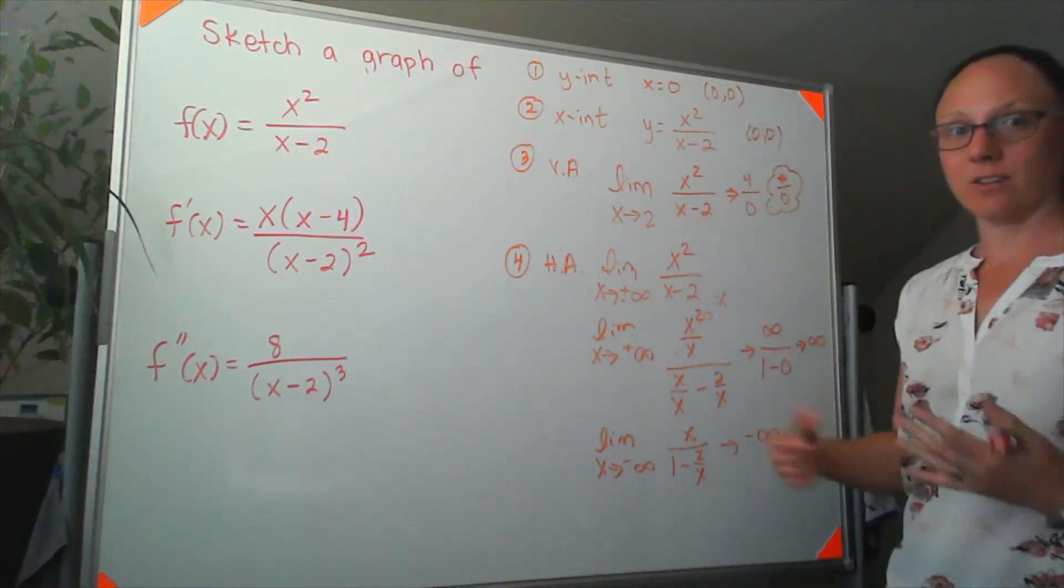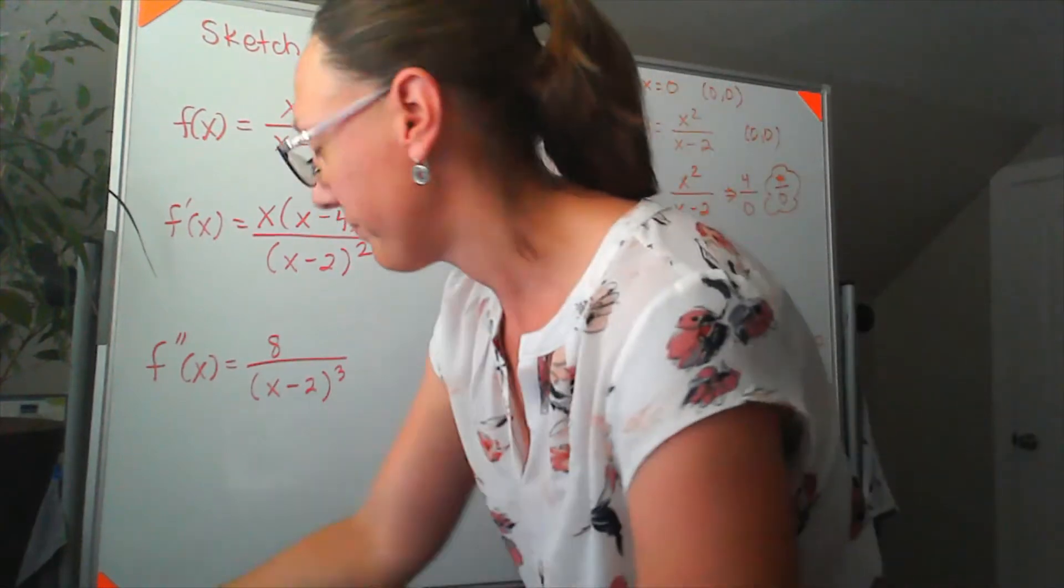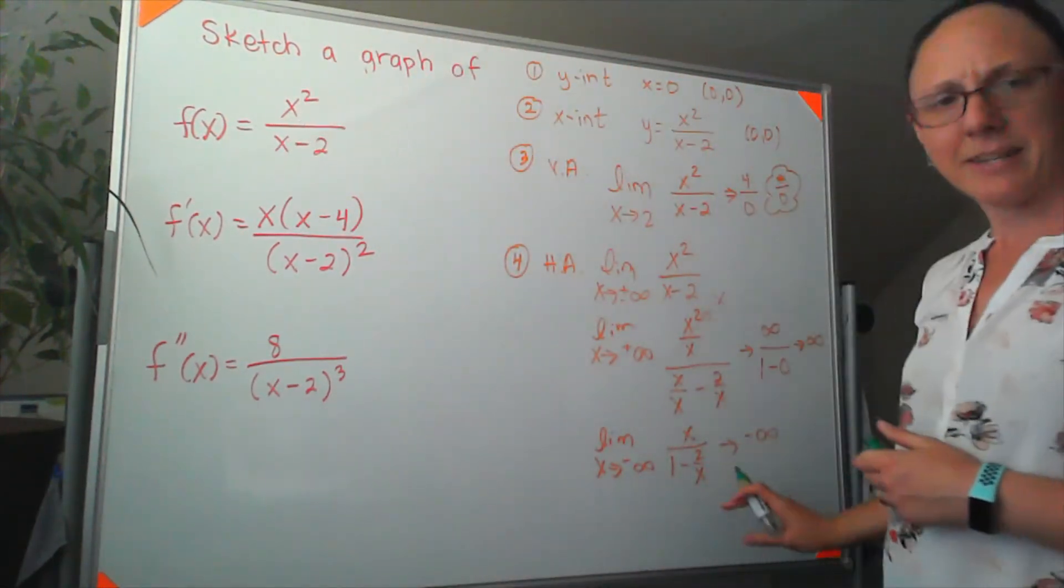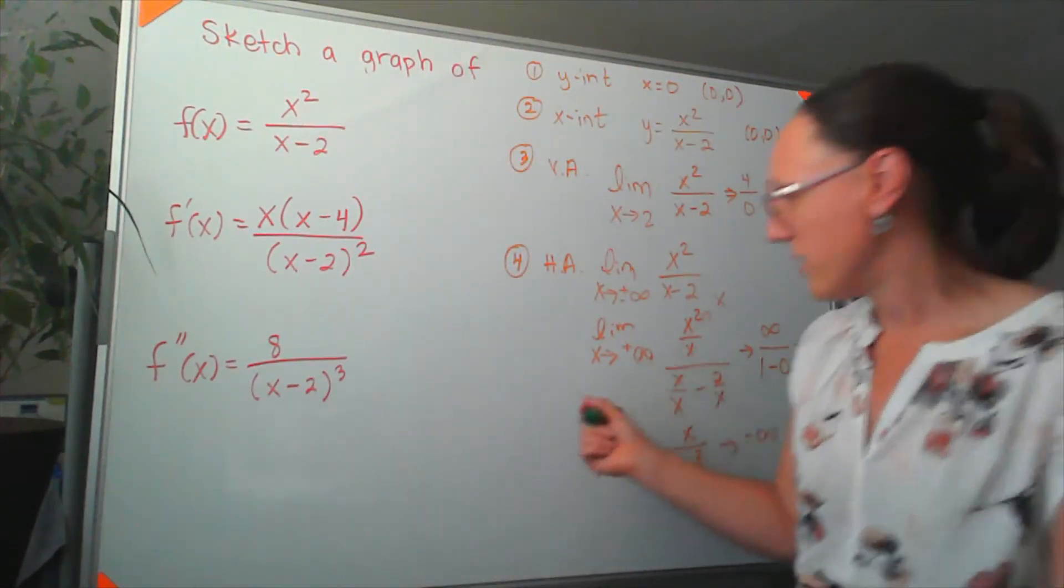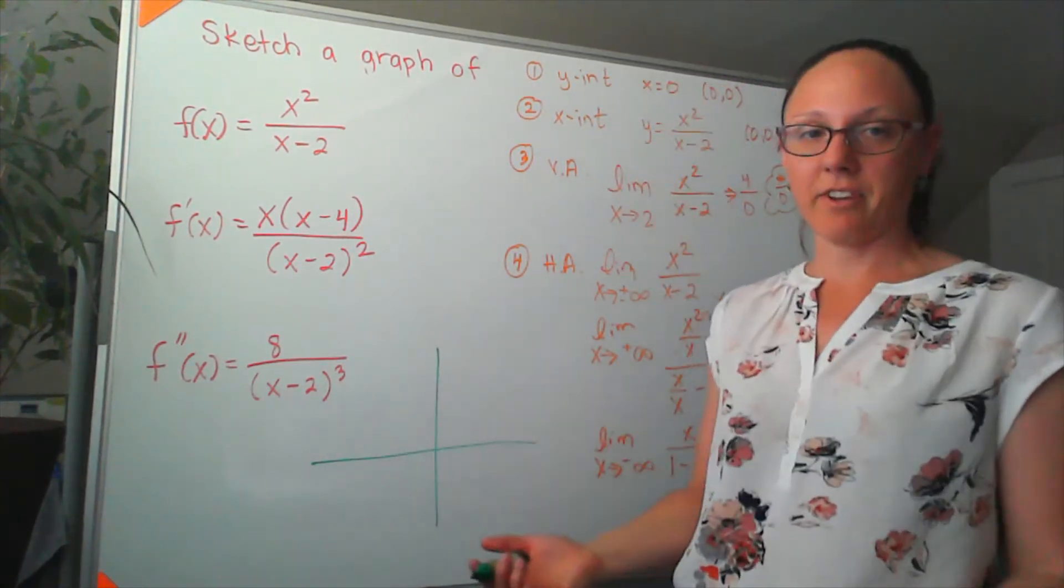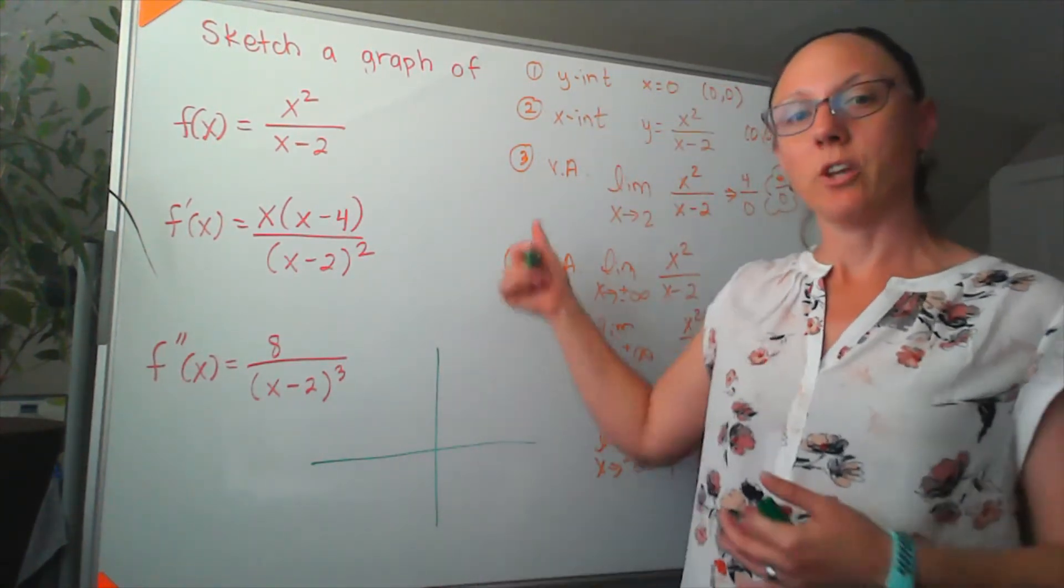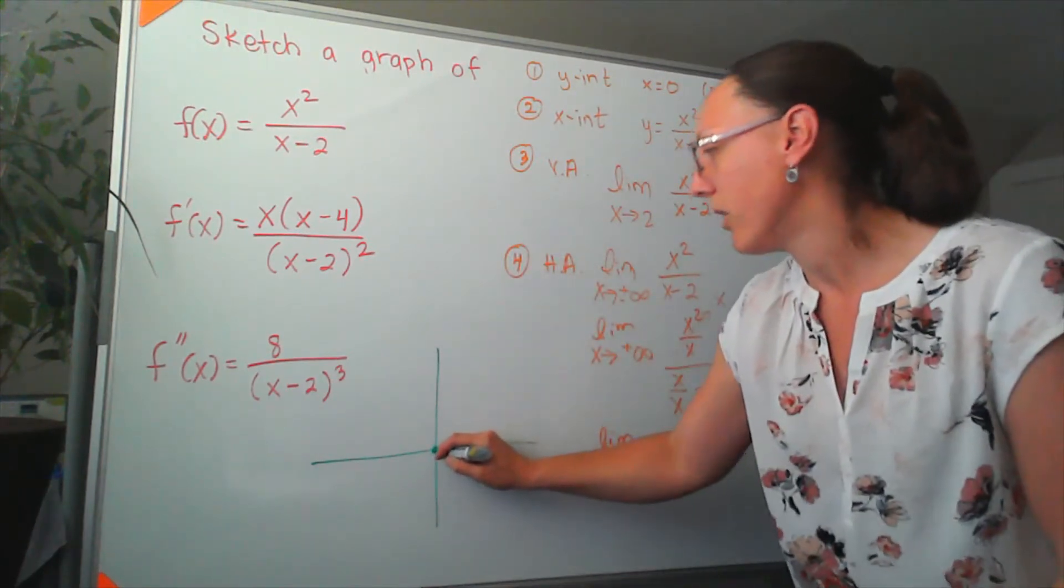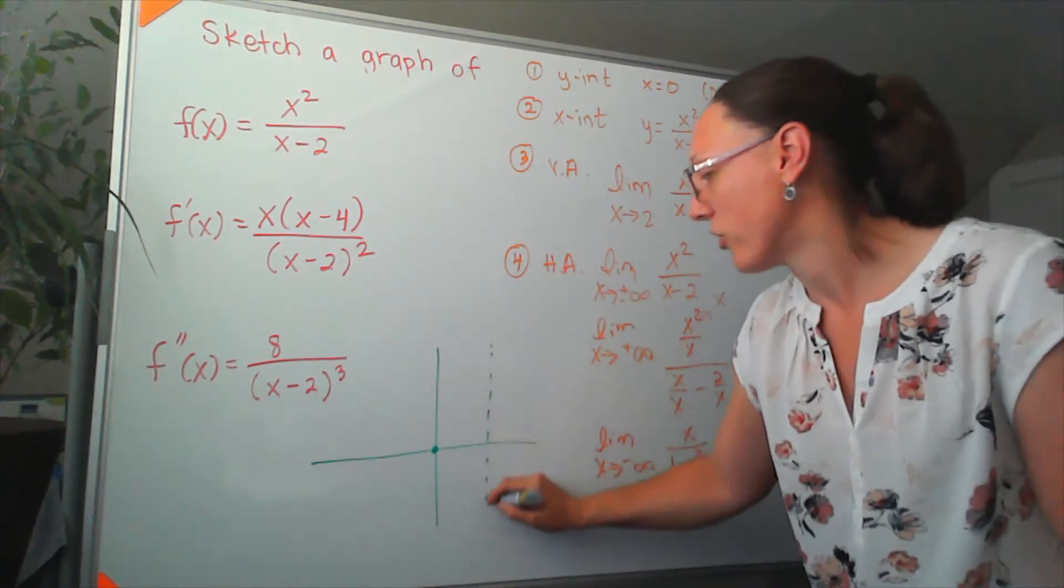Well, that's about as far as we can get using those pre-calc skills. And not everybody sees limits in pre-calc, so don't worry about that. But that's enough to get a rough sketch of my graph going. So we know we've got an intercept at 0, 0. We know that we have a vertical asymptote at x equals 2.